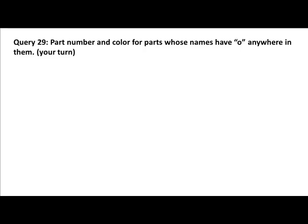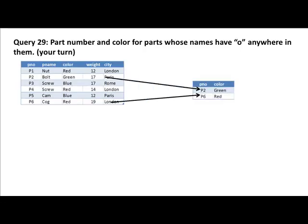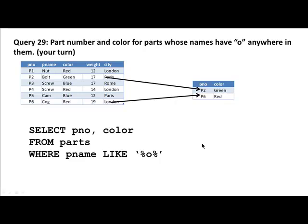One more for you: part number and color for parts whose names have a lowercase o anywhere in them. Cog and Bolt have an O somewhere in them — both happen to have it in the second position but that doesn't matter. SELECT part number, color FROM parts WHERE part name LIKE percent o percent, because lowercase o can occur anywhere in the part name — any number of characters before, any number after, meaning zero or more.